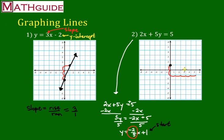So once I've done the horizontal and vertical moves, I have another second point. Now I can draw the line that connects those two points, and I have the line for this equation. And I'm done.